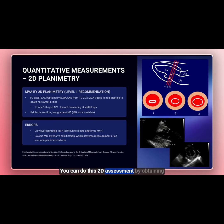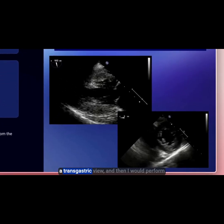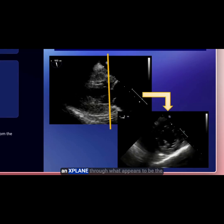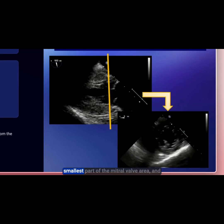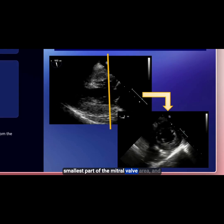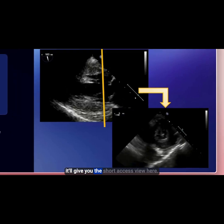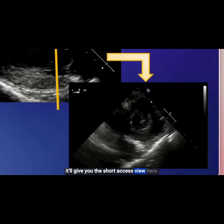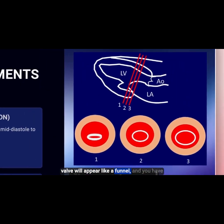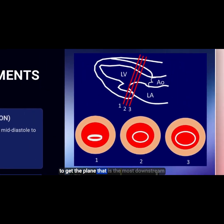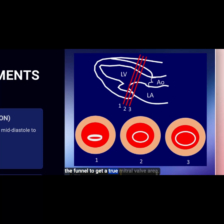You can do this 2D assessment by obtaining a transgastric view, and then performing an X-plane through what appears to be the smallest part of the mitral valve area, which will give you the short axis view. The mitral valve will appear like a funnel, and you have to get the plane that is most downstream on the mitral valve — the smallest part of the funnel — to get a true mitral valve area.